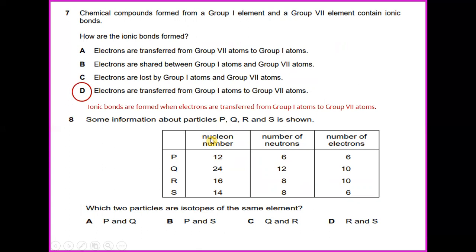Some information about particles P, Q, R, and S is shown. The formula is: nucleon number equals number of neutrons plus number of protons. From this table, what fulfills this criteria is P and S. So the answer will be A.